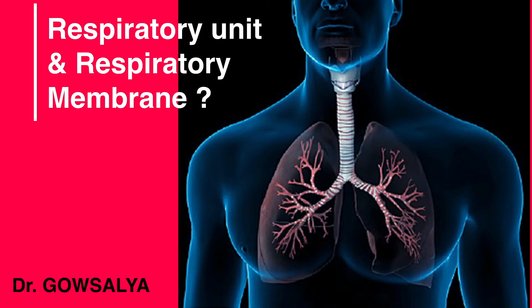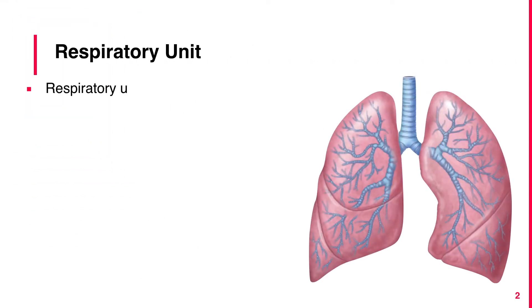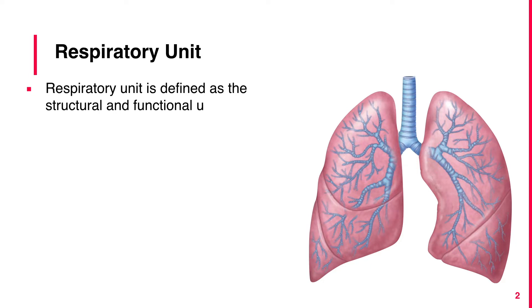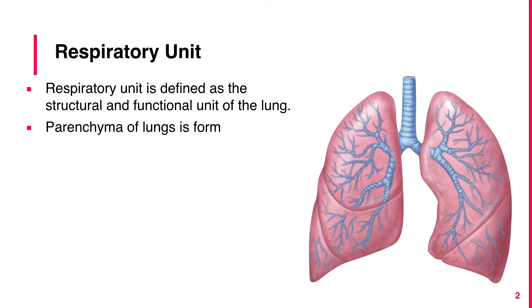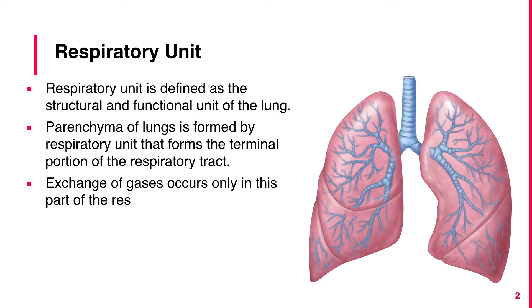What is respiratory unit and respiratory membrane? The respiratory unit is defined as the structural and functional unit of the lung. The parenchyma of the lungs is formed by the respiratory unit, which forms the terminal portion of the respiratory tract. Exchange of gases occurs only in this part of the respiratory tract.